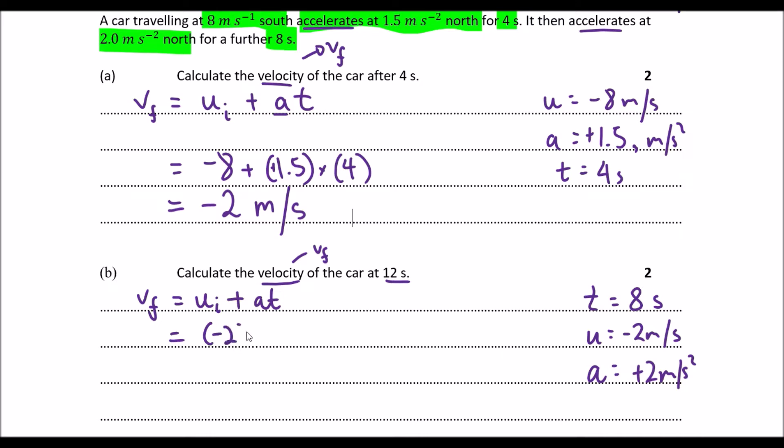My initial is negative 2, plus my acceleration, which is 2, times my time. I'm going to plug that into the calculator. And the final velocity will be a positive 14 meters per second. Essentially, we're going 14 meters per second north. Now, if you've already written the plus sign here and you mentioned that direction, you won't have to talk about direction here. Let's go to the third part of this question.